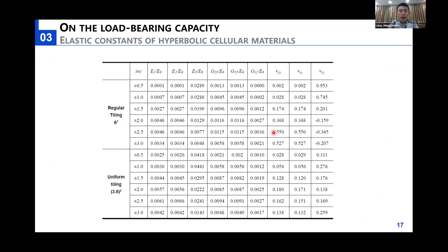In this table, we present the elastic constants of these hyperbolic cellular materials following the regular tiling and the uniform tiling respectively. For a non-dimensional measure, the compressive stiffness and the shear stiffness have been normalized by the Young's modulus of the parent material. We notice that the compressive stiffness is mostly influenced by these inclination angles. Concerning the shear stiffness, we see that the more inclined the struts are, the higher these shear stiffness are.